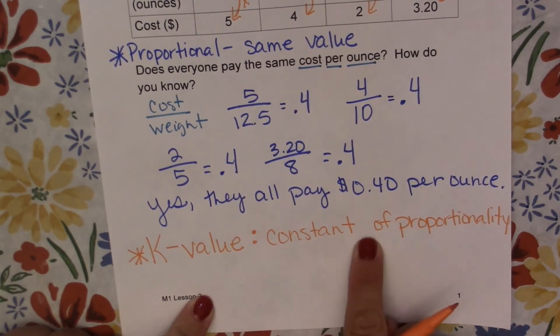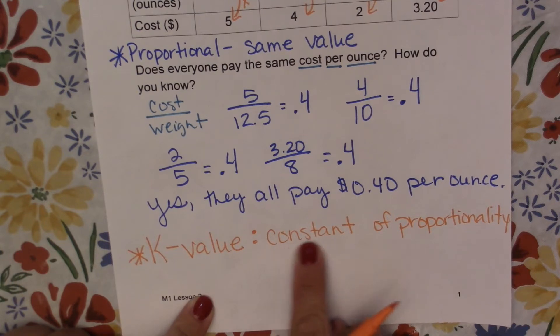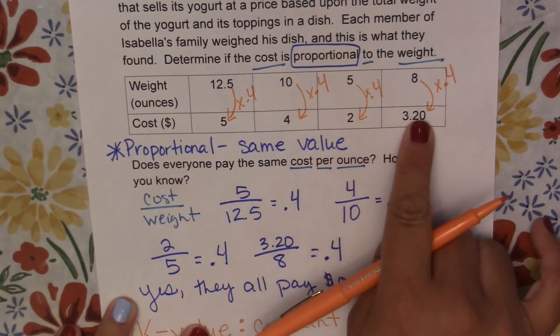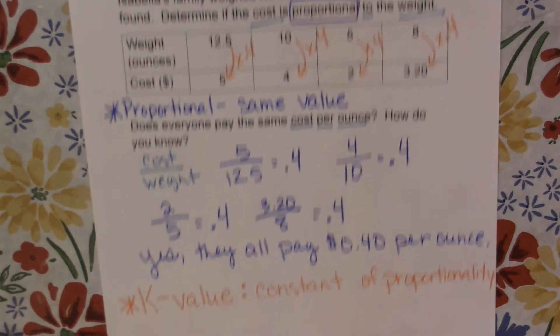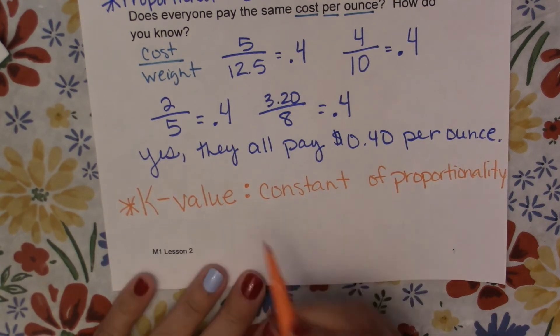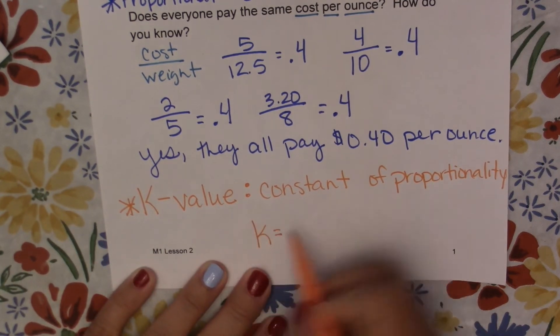Now if we talk about a constant, we're talking about something that stays the same. So this value that we multiplied by stayed the same. So we would say that our K value is 0.4.